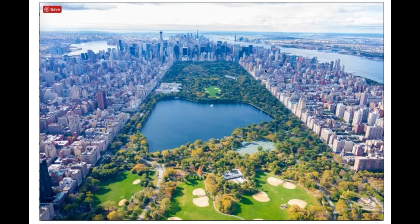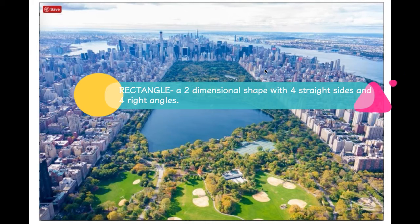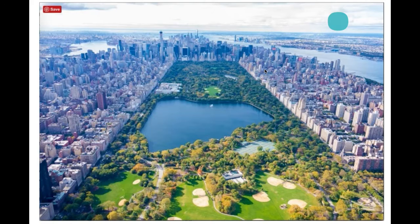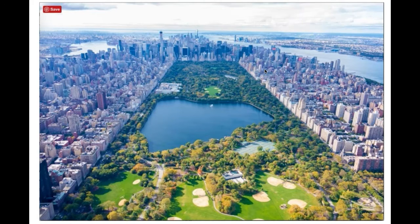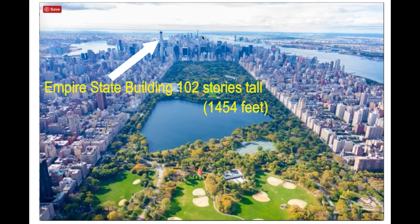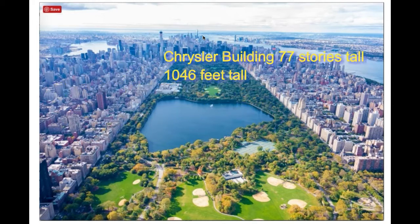This is a picture of Central Park from the air. As you can see, it's a rectangular 900-acre green space located among all the skyscrapers in New York City. Some of the buildings you see in this picture are among the tallest in the United States. One of the buildings in the picture is 102 stories tall, and another is 77 floors tall.